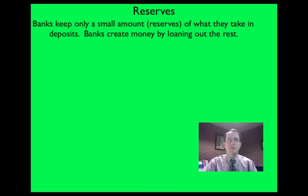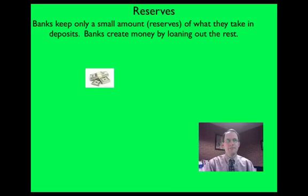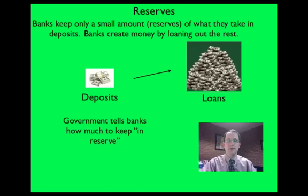Banks keep only a small amount of what they take in from deposits. What they do is take what's not required for them to hold on to — sometimes called reserves — and loan out the rest. That's how they make money. They take a small amount in deposits, then loan out the rest, and that's really where the economy grows as a result of the banking system.